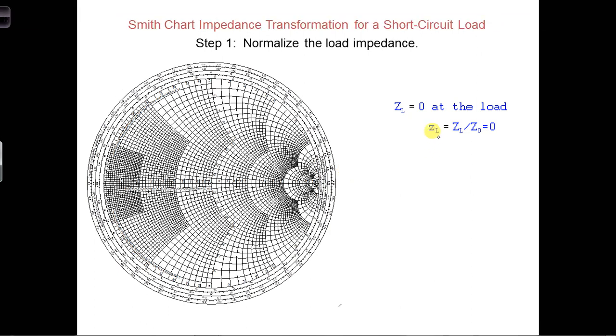The normalized load impedance is little zl, which is capital ZL over z naught, which is also zero.